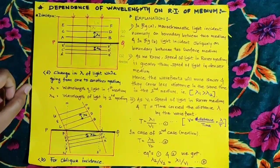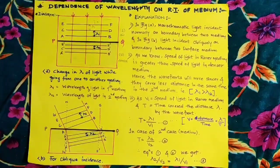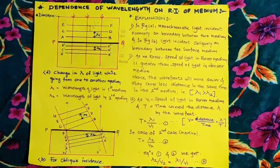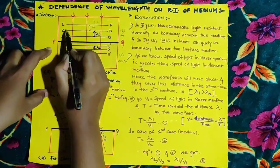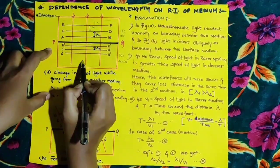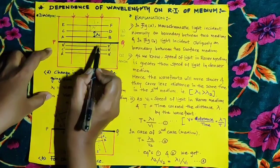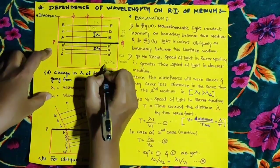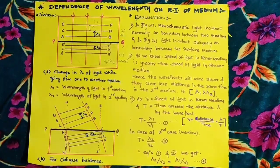The speed of light in a rarer medium is greater than in a denser medium. Because of this, wavefronts move slower and cover less distance in the same time in the second medium. In the rarer medium, wavefronts cover distance lambda 1, but in the denser medium they cover less distance. Therefore, lambda 1 is greater than lambda 2 — the wavelength in the rarer medium is greater than in the denser medium.